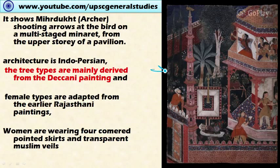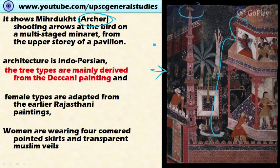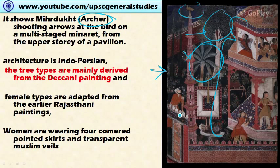One important painting in Hamza Nama shows an archer in the palace of a queen shooting arrows at a bird near a multi-stage minaret. This painting demonstrates borrowings from various other schools: the tree types are derived from Deccan painting, the female figures are adapted from earlier Rajasthani paintings, and the architecture is Indo-Islamic. Women are wearing pointed skirts and transparent muslin garments, showing how Mughal painting borrowed from diverse Indian traditions.